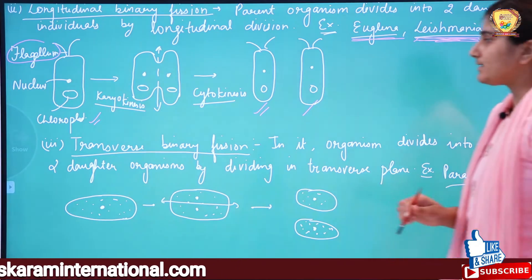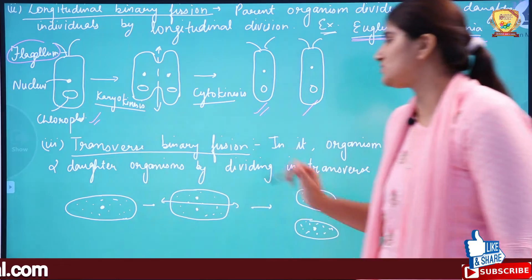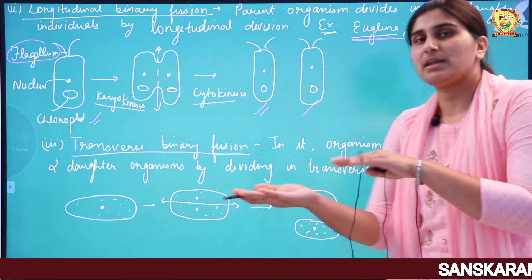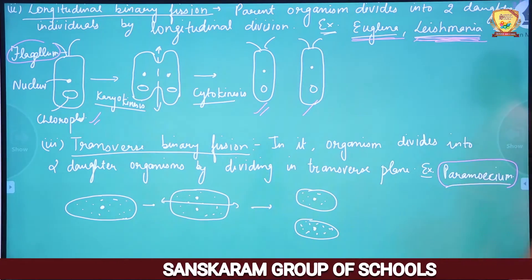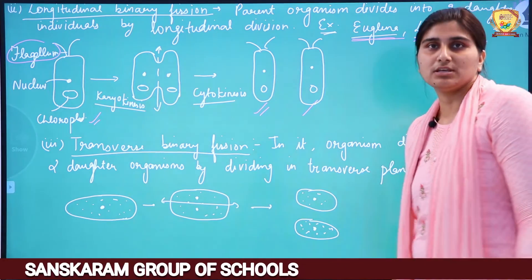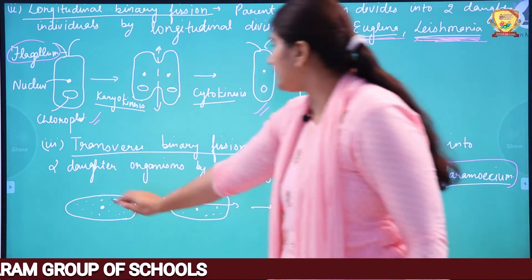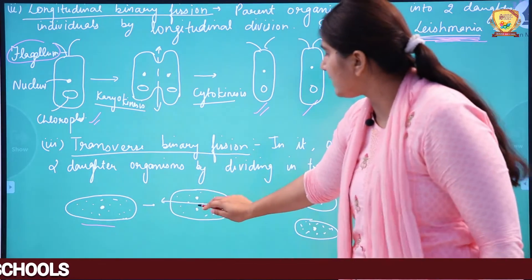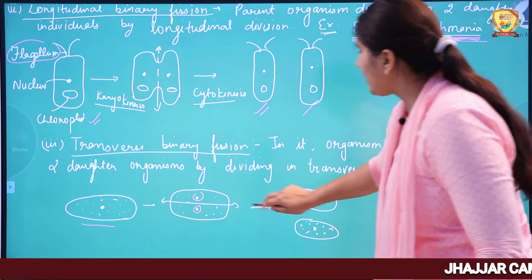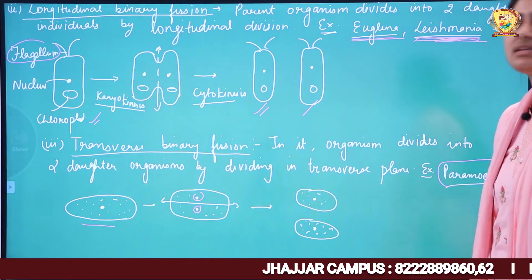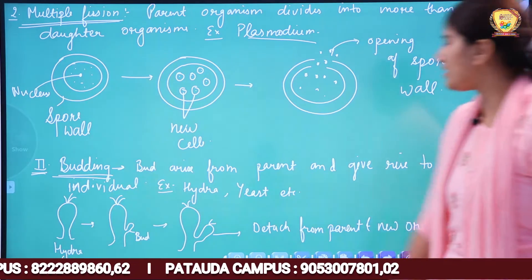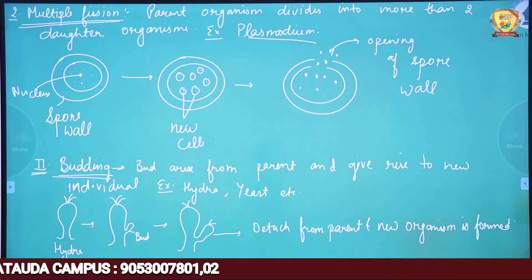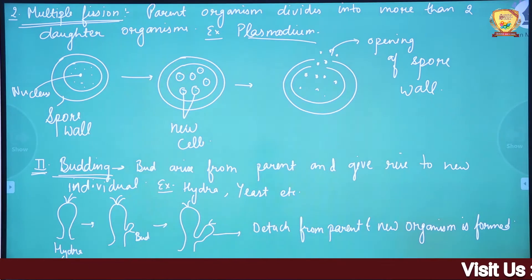The third type is Transverse Binary Fission, where division occurs in the horizontal (transverse) plane. The example is Paramecium. In Paramecium, the nucleus divides and then the cell divides horizontally, giving two cells. Please take a screenshot.